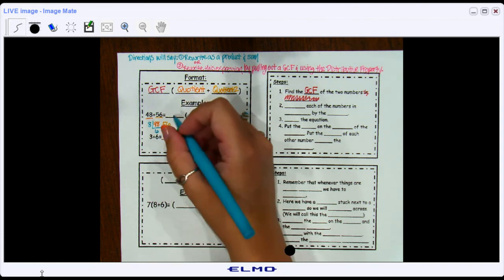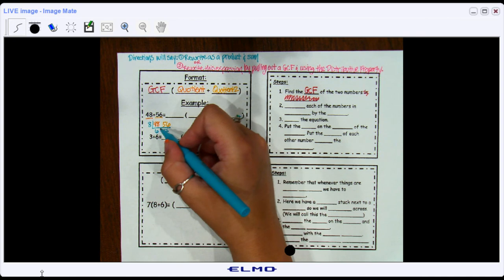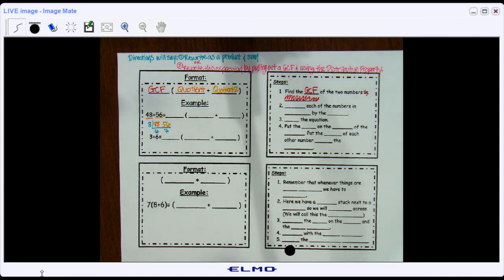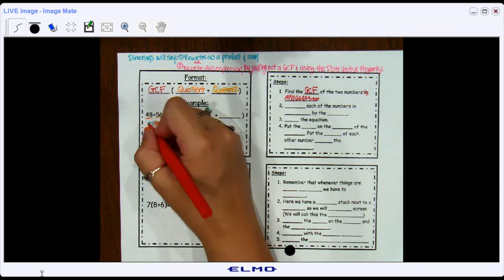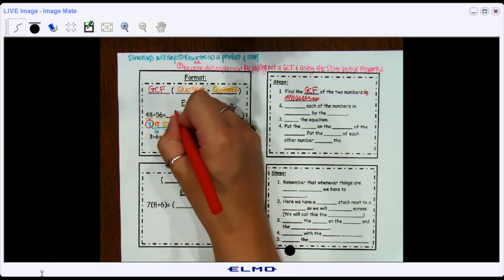Just like before, if you can't keep going anymore, if these two numbers have no more common factors, you know you're done. The number along the outside is your GCF. So that's going to go in front.